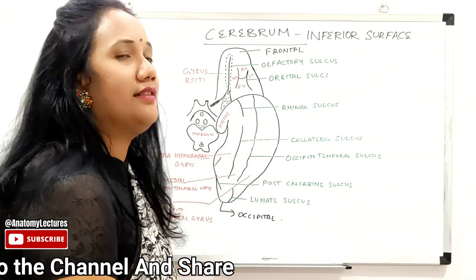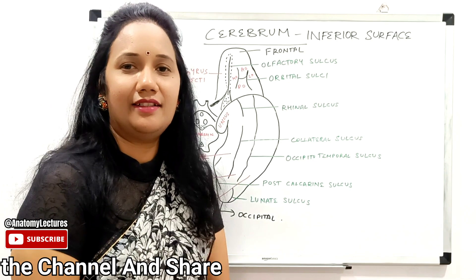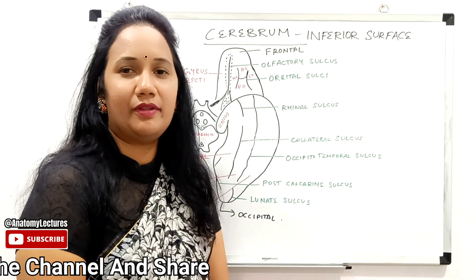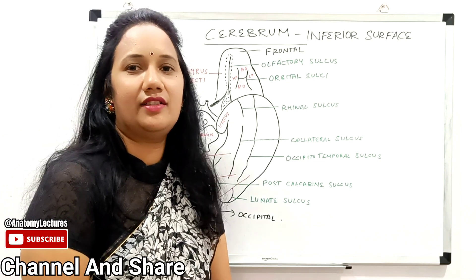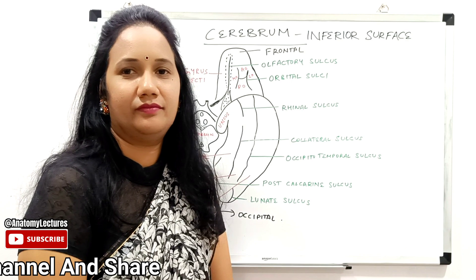These are the major sulci and gyri present on the inferior surface of the cerebrum.